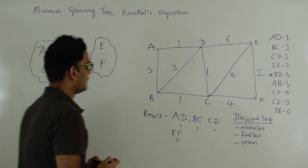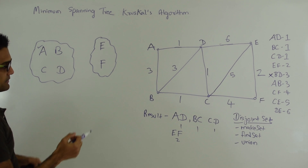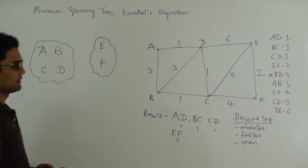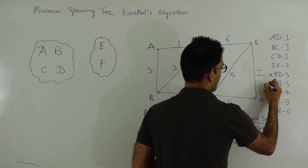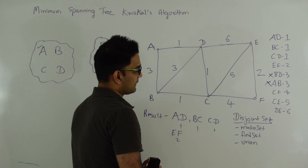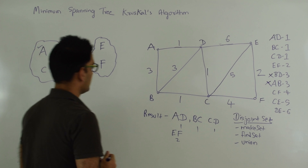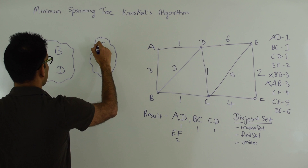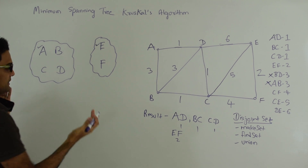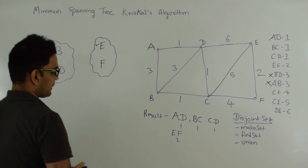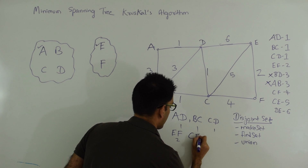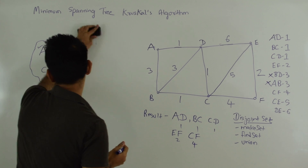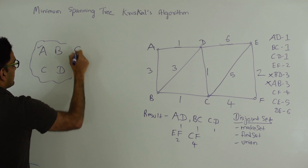Then we'll pick the next edge AB. A is represented by A and B is represented by A, which tells us that A and B are in the same disjoint set. So again we'll ignore edge AB. Then we'll pick the next edge CF. C is in set A and F is in set E, so they are in two different sets. We'll pick edge CF and merge these two disjoint sets.